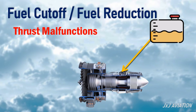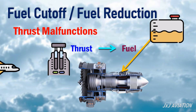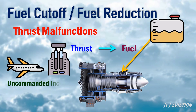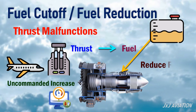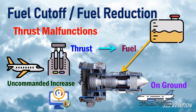Thrust Malfunctions. The amount of thrust generated by the engines changes with the amount of fuel that is sent for combustion. On some modern aircraft, in case there is an uncommanded increase in the thrust, the engine computers will reduce the fuel flow to the engine. On ground, if there is an uncommanded increase in thrust, the computers can even cut off the fuel to the engines.